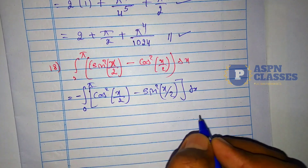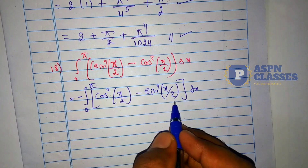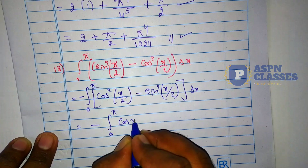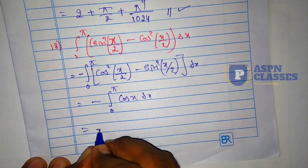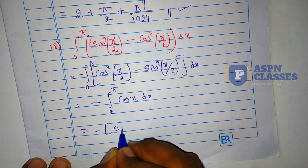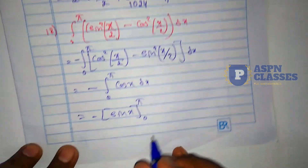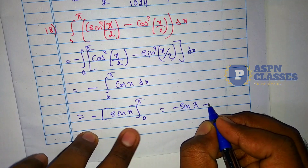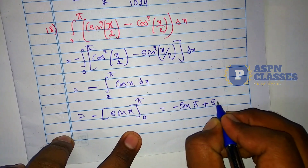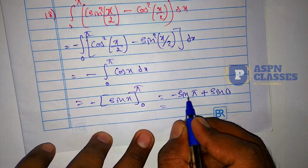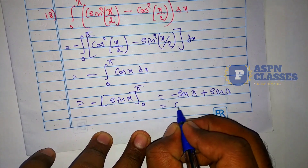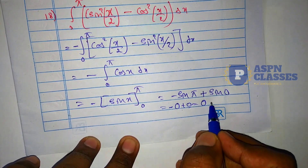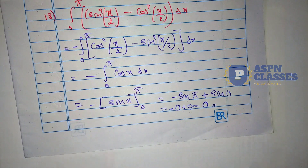We use the formula: cos²(x/2) - sin²(x/2) = cos x. So sin²(x/2) - cos²(x/2) = -cos x. This means we integrate minus cos x from 0 to π. Minus is as it is, and the integration of cos x is sin x. Applying limits: -[sin(π) - sin(0)] = -[0 - 0] = 0. The total answer is 0.